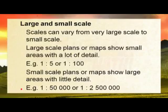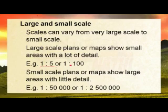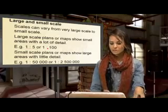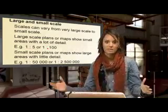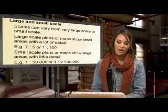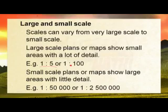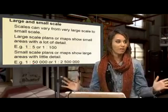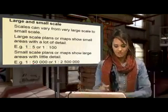Scales can vary from large scales to small scales. Large scale maps show small areas with a lot of detail — for example 1 to 5 or 1 to 100 — meaning 1 centimeter on the map is just 5 or 100 centimeters in reality, showing a lot of what's going on. Small scale maps show large areas with less detail — for example 1 to 50,000 or 1 to 2,500,000 — leaving out a lot of detail and just showing vast areas of land.